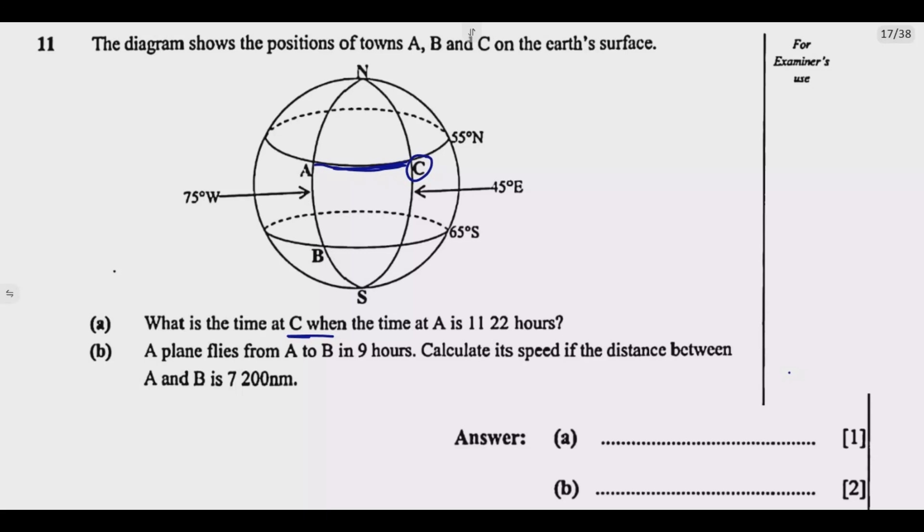So the towns that are in the east are ahead of time. Then in terms of the time difference, the time difference between these two points or any locations on the earth's surface depends on their difference in longitude. So A is on longitude 75 degrees west. Then C is on longitude 45 degrees east. But they're all on the same latitude, which is 55 degrees north.